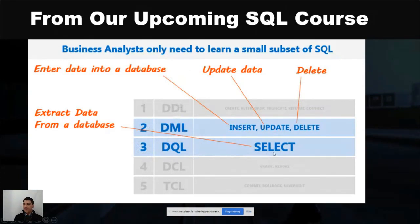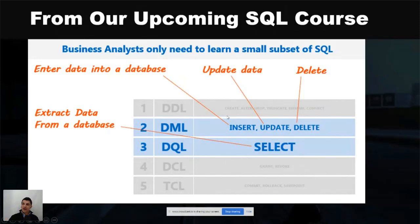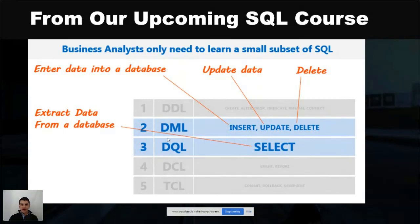Category three — the Data Query Language — lets you extract data that already exists inside a database. Category two, the Data Manipulation Language, allows you to enter new records into a database, update existing records, or delete records. Most business systems analysts are working with SELECT statements in order to pull out existing data. Category two statements are ones analysts can use given certain conditions or needs that an employer has.